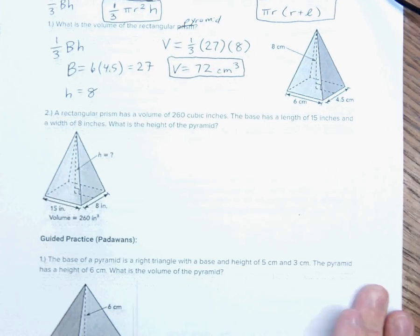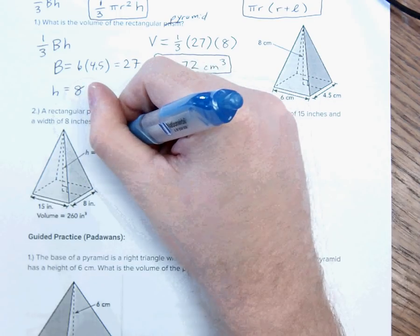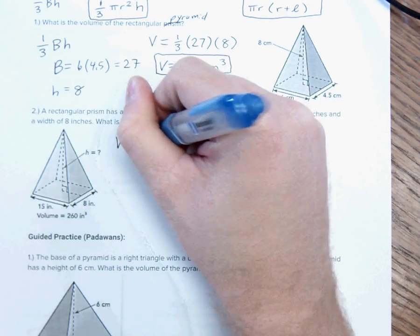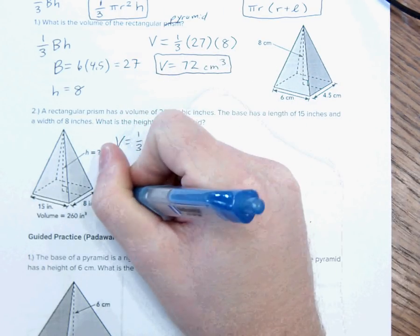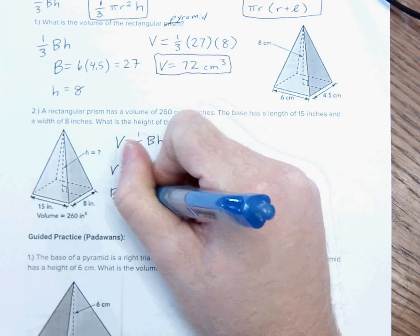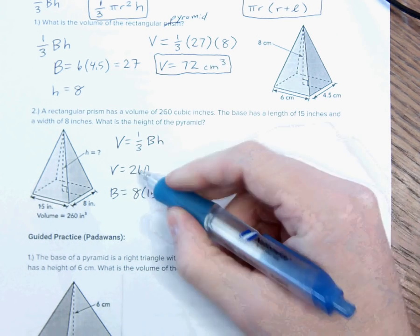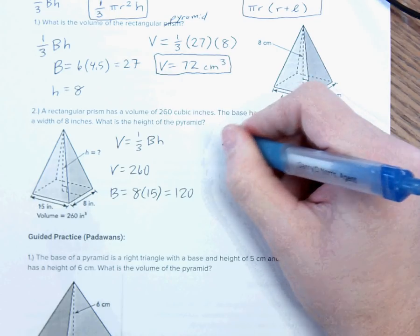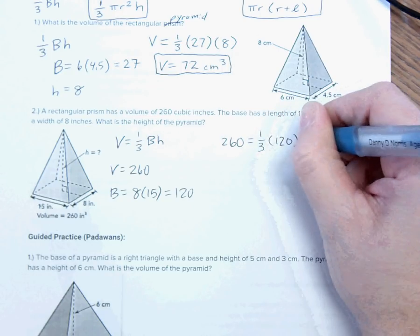If I start out with the volume, like this one, a rectangular pyramid has a volume of 260 cubic inches. The base has a length of 15 and a width of 8. What is the height of the pyramid? So, we know volume equals one-third base times height. My volume equals 260. My base equals 8 times 15, which is 120. So, if I plug these two numbers in, I get 260 equals one-third times 120 times the height.